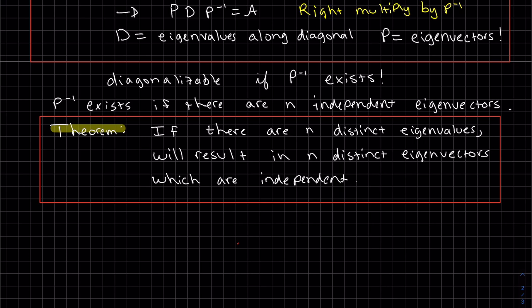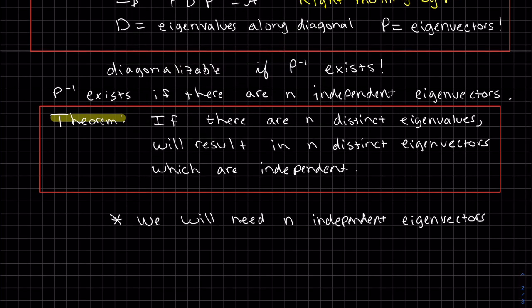There is a theorem that says if there are N distinct eigenvalues, it will result in N distinct eigenvectors, which are independent. So really, we will need N independent eigenvectors in order to diagonalize A. So from this theorem, one way to get that is if we have N distinct eigenvalues, that will result in N distinct eigenvectors, which are independent.